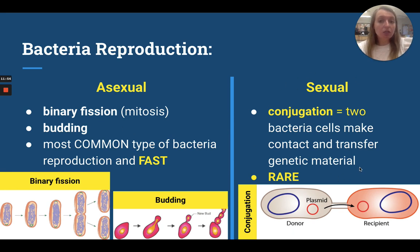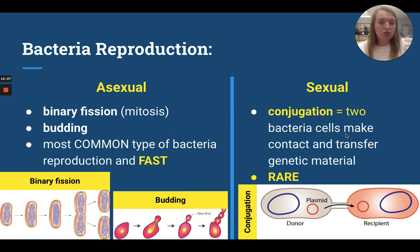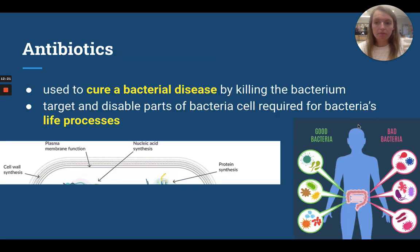Next is sexual reproduction. Some bacteria do sexual reproduction, and in bacteria this is called conjugation. This is where two bacteria make contact with each other and then transfer genetic material. This is relatively rare — it's not super common, but it can happen. For example, a plasmid — this red plasmid — is given to another bacteria.